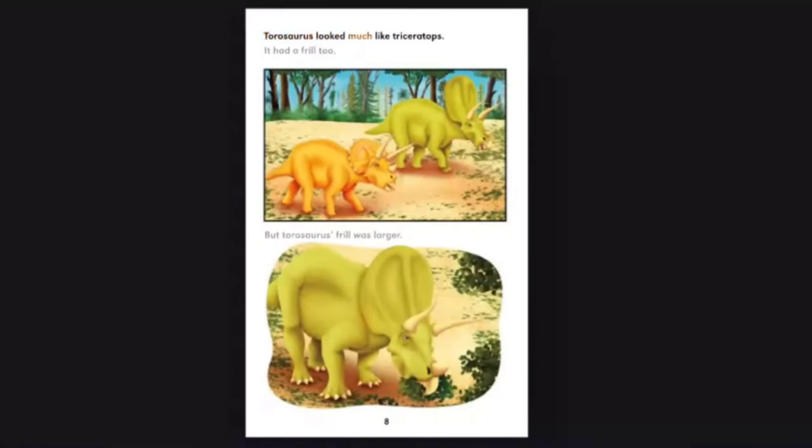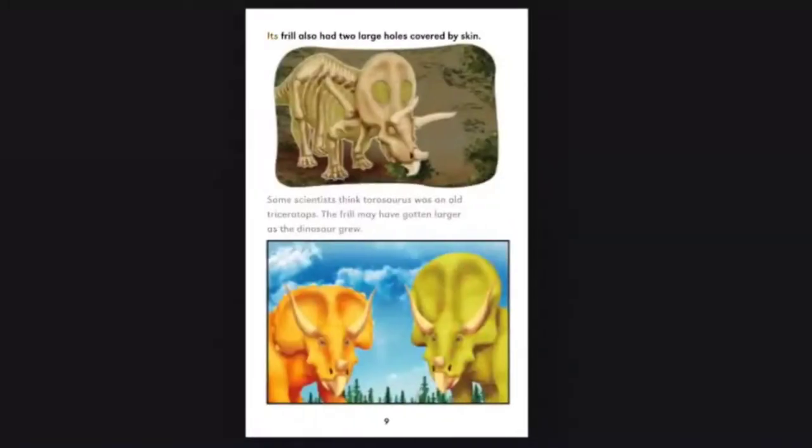Torosaurus looked much like Triceratops. It had a frill too, but Torosaurus' frill was larger. Its frill also had two large holes covered by skin. Some scientists think Torosaurus was an old Triceratops. The frill may have gotten larger as the dinosaur grew.